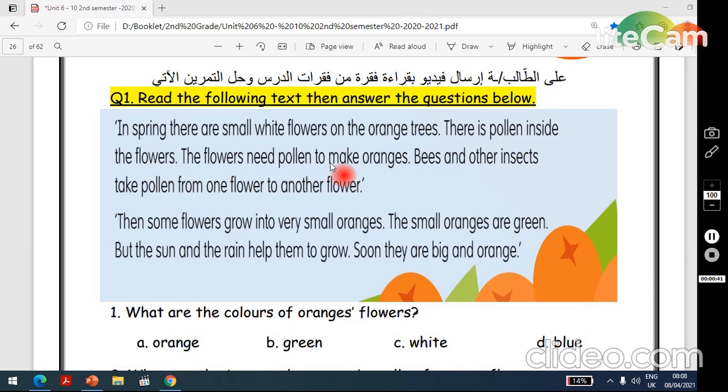Bees and other insects take pollen from one flower to another flower. Then some flowers grow into very small oranges. The small oranges are green, but the sun and the rain help them to grow. Soon they are big and orange. Now move on. What are the colors of oranges flowers?